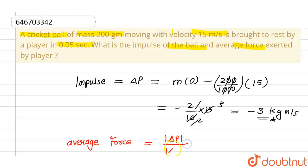So this is minus 3, or I can write only 3 because I am writing the magnitude only, divided by time which is 0.05. This will lead us to 60 Newtons as the average force.